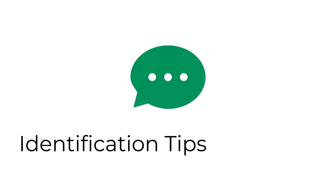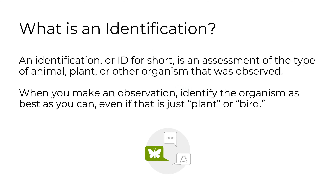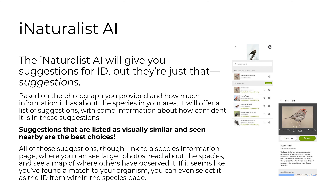Here are some identification tips. An identification, or ID for short, is an assessment of the type of animal, plant, or other organism that was observed. When you make an observation, identify the organism as best you can, even if that's just plant or bird. The iNaturalist AI will give you suggestions for ID, but they're just that — suggestions.